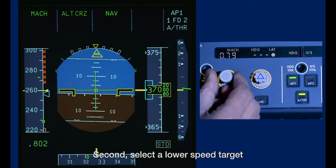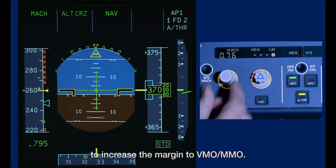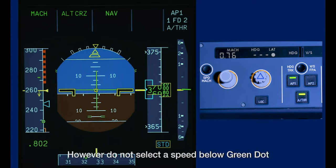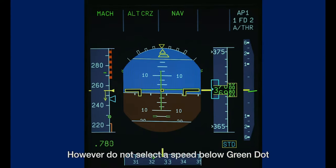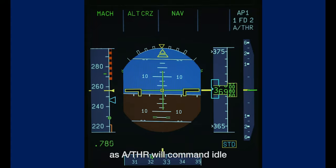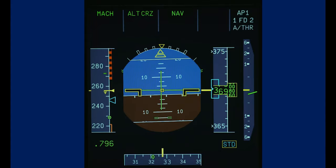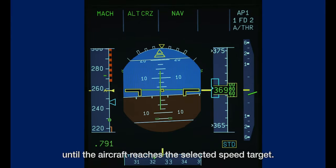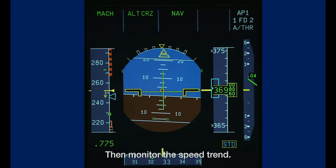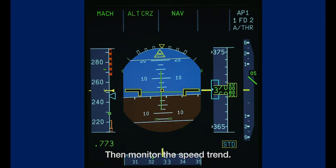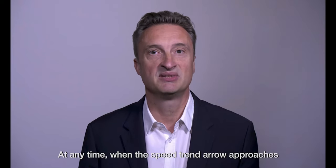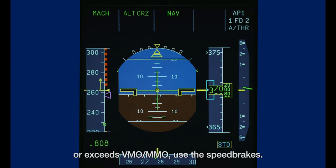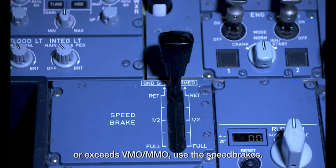Second, select a lower speed target to increase the margin to VMO/MMO. However, do not select a speed below green dot, as autothrust will command idle until the aircraft reaches the selected speed target. Then, monitor the speed trend. At any time when the speed trend arrow approaches or exceeds VMO/MMO, use the speed brakes.